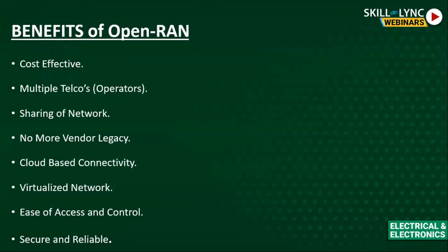Last but not least, Open RAN provides a very secure and reliable network. If any outage occurs, it can be troubleshot quickly. Previously, experts were confined to a single service provider, but now since hardware is unified, anyone can troubleshoot issues. Security patches can be applied uniformly across all service providers since they use the same hardware, making the network highly secure and reliable.